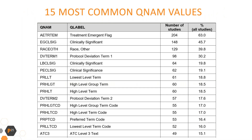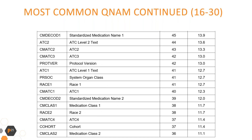The next table represents the 30 most common values for QNAM variables across all SUPPQUAL datasets and studies. You can see the number of studies where these QNAM values are present, and the percentage of studies where each QNAM value is utilized. This is the second part of that table.